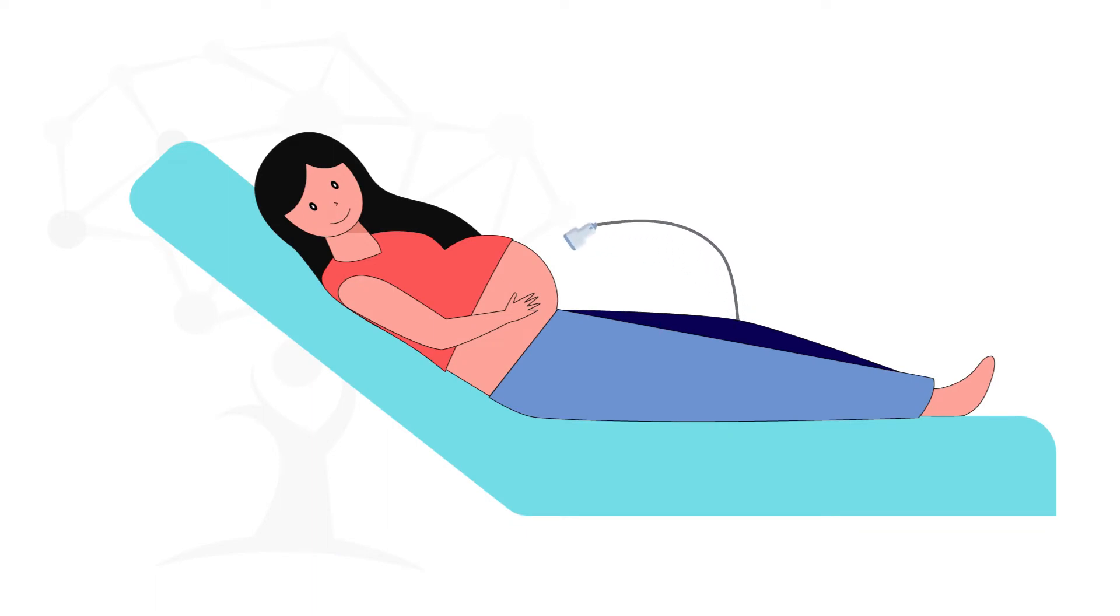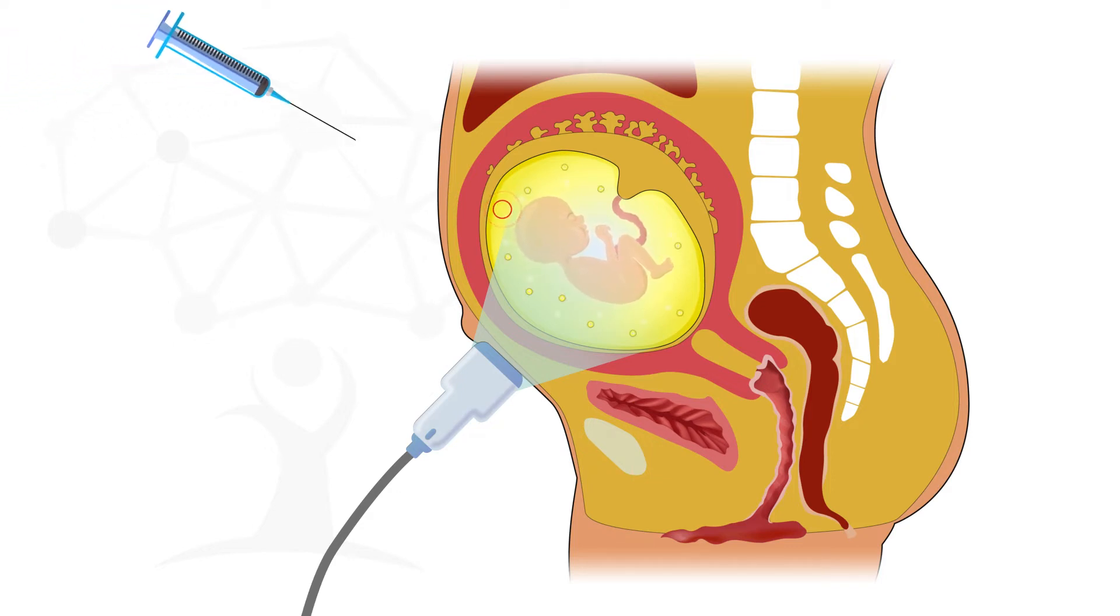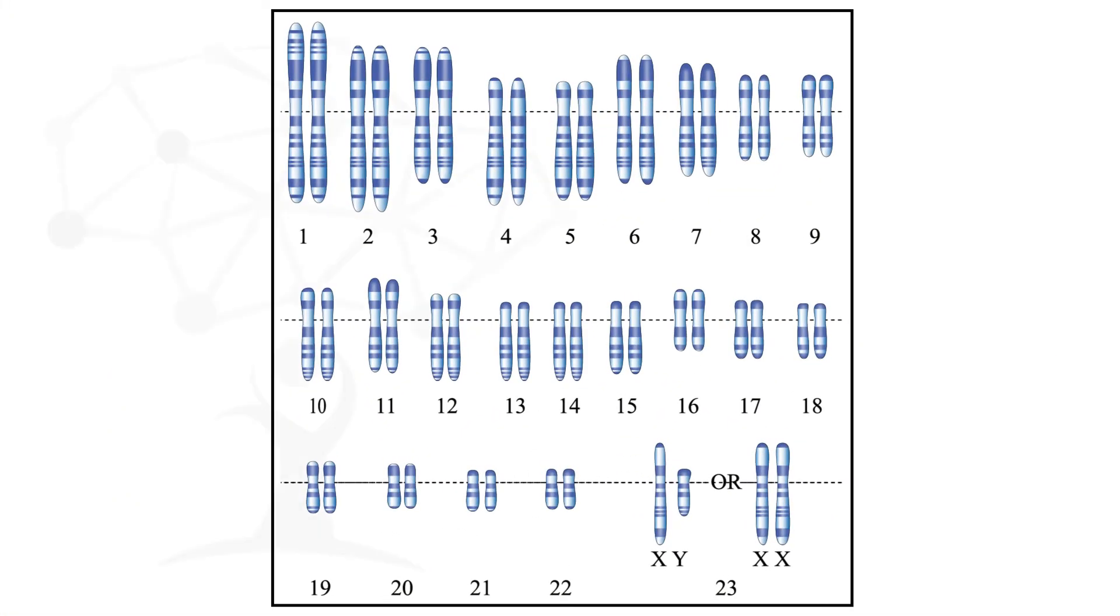During amniocentesis, an ultrasound transducer is used to show the baby's position in the uterus on a monitor. A sample of amniotic fluid, which contains fetal cells and chemicals produced by the baby, is withdrawn. This amniotic fluid sample is sent to the lab. In the lab, they separate the baby's cells from the amniotic fluid and then analyze them for genetic conditions or neural tube defects.